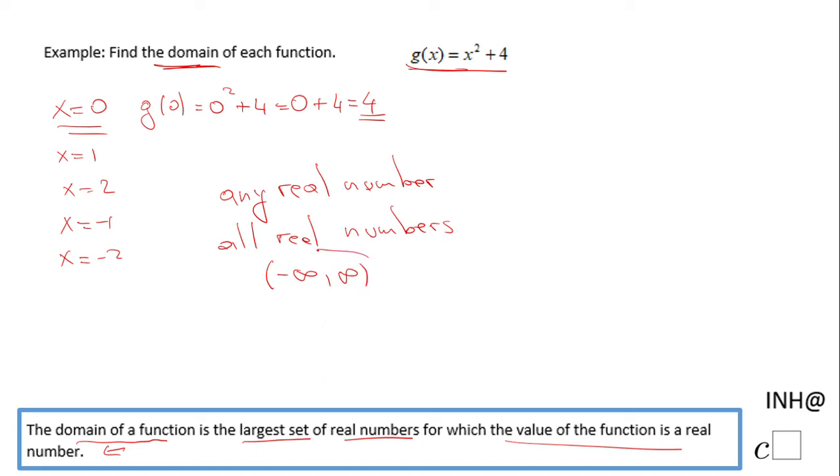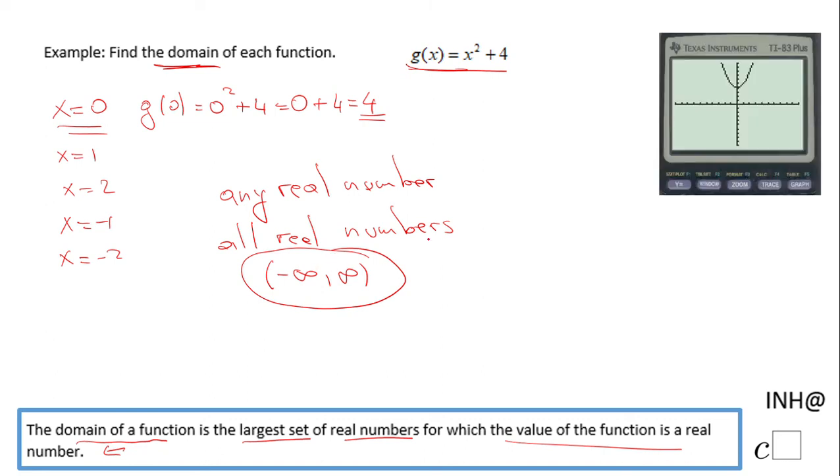You can look at this problem graphically if you have a graphing calculator. This is the graph of g(x) = x² + 4, and you'll notice that for whatever value I have for x, I will be able to go up and get the corresponding value of the function g(x).